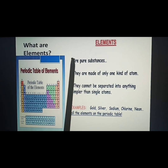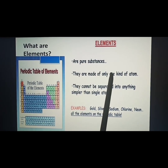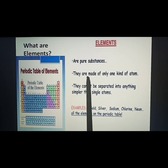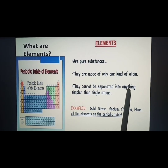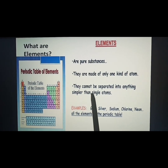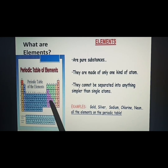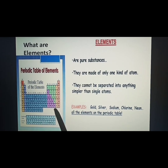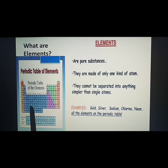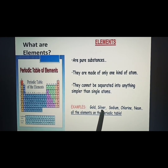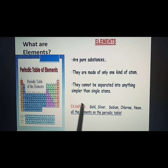Elements are pure substances made up of only one kind of atom. Elements cannot be separated into anything simpler than a single atom — they cannot be further divided into simpler substances. There are 118 known elements discovered till today. All these elements are kept in the periodic table. Some examples of elements are gold, silver, sodium, chlorine, and neon.